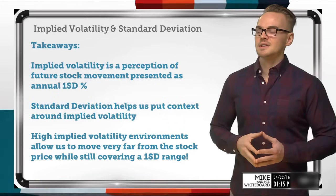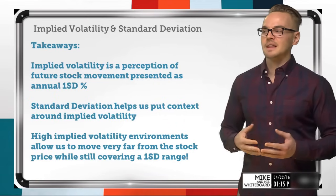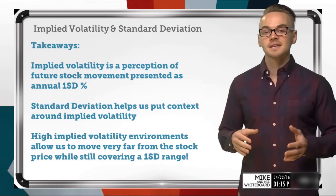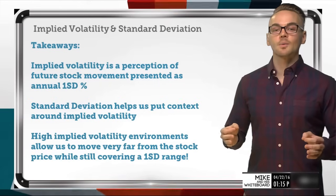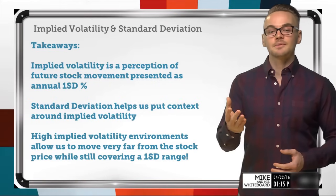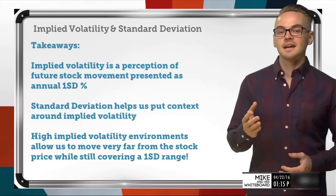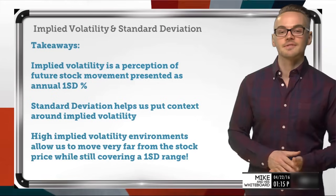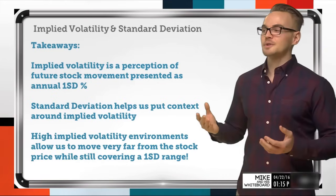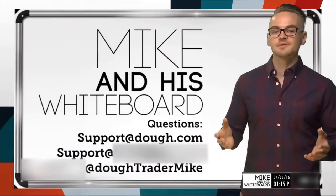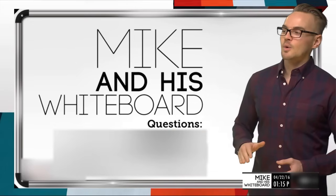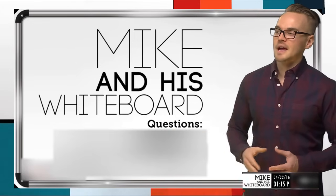Standard deviation gives us context around those strike prices and how implied volatility will affect those ranges. Higher implied volatility environments allow us to move much much further away from that stock price and still get that one standard deviation range, as exemplified in those two graphs. Thanks so much for tuning in — if you've got any questions or feedback, shoot me an email here or follow me on Twitter at @dotradermike.